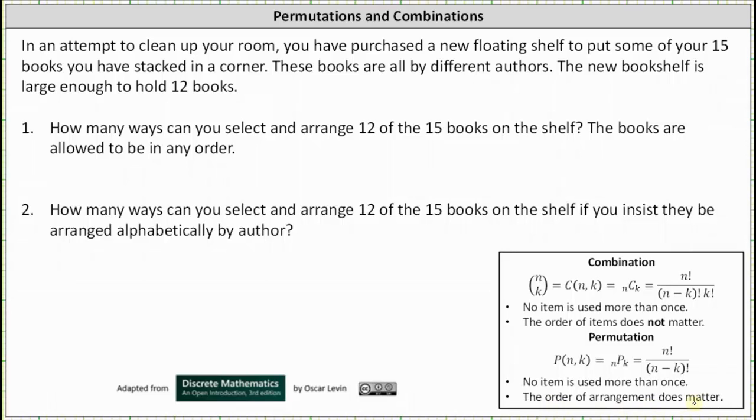So because there are a total of 15 books and you are selecting and arranging 12 of them at a time, the number of ways you can select and arrange 12 of 15 books on the shelf when the order matters is 15 permute 12.